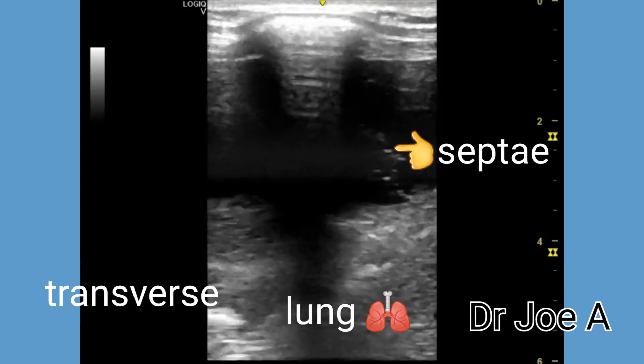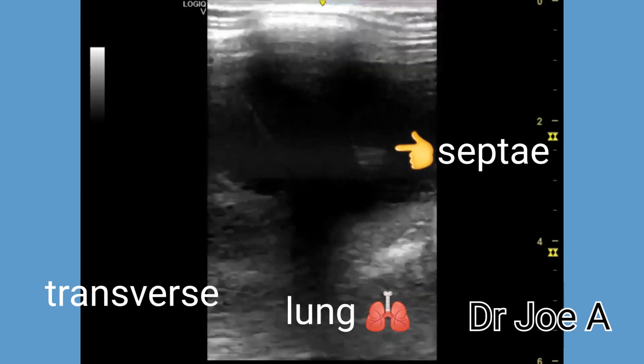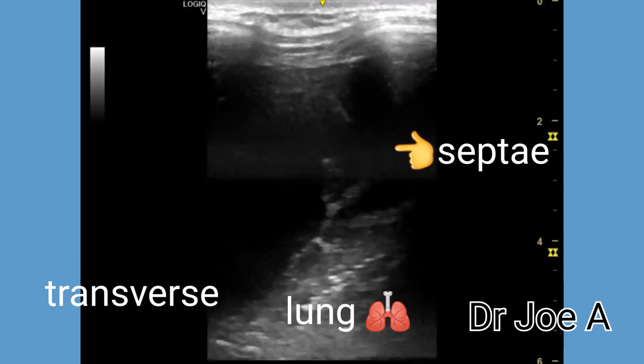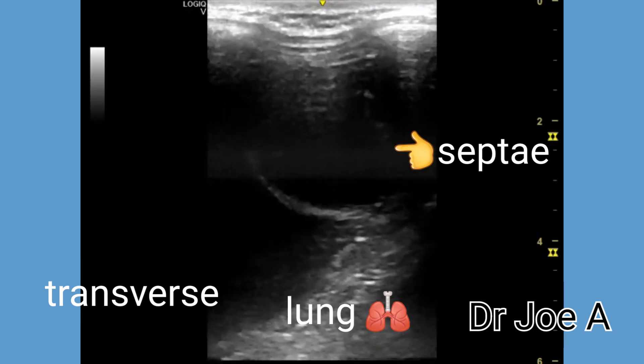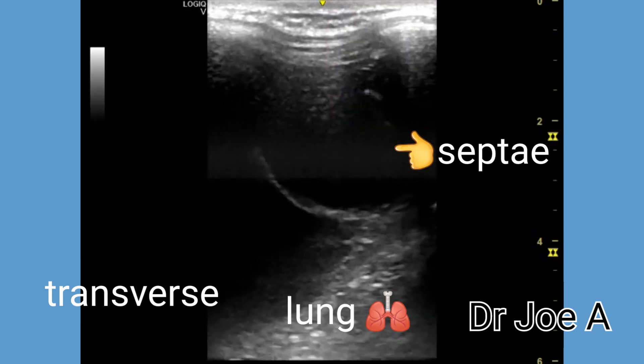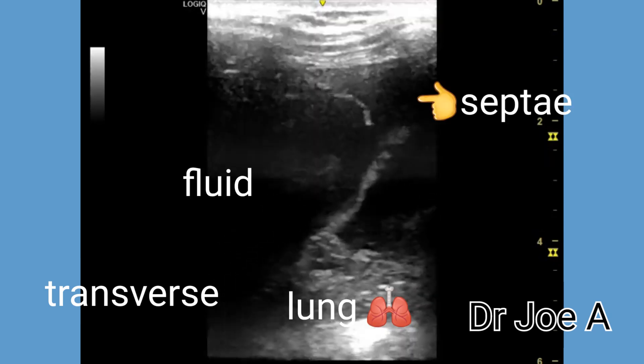A septate pleural effusion can be seen on ultrasound as multiple fluid pockets separated by echogenic septations.